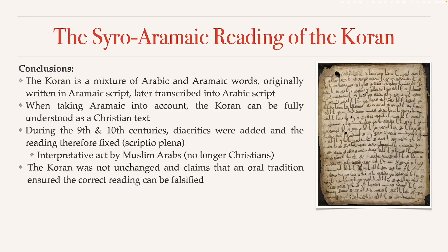So what's the conclusion? We've looked at one example here, the Huris, but Luxenberg did the same thing with lots of verses on entirely different topics. He could show that many passages in the Quran were actually written in Aramaic or excessively used Aramaic words, sometimes entire sentences. And in every single case, he could make sense of the previously dark passages. The Huri example isn't even considered a dark passage — it's considered clear, despite the oddities.